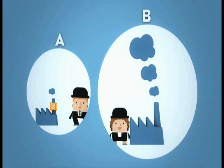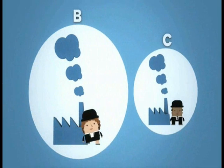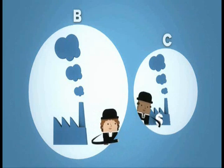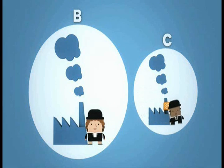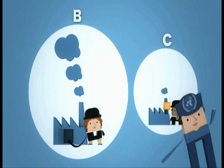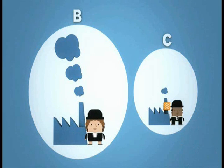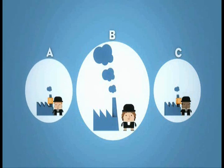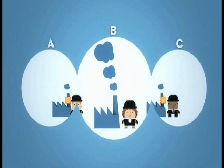However, Factory B can also cover its emissions by investing in CO2 reducing measures in Factory C, which is located in a developing country. Although this country does not have any obligations under the Kyoto Protocol, the UN can still approve the emission reductions and give Factory B carbon units equivalent to the reductions in Factory C. So, regardless of whether Factory B buys units from Factory A or C, the result is reduced emissions.